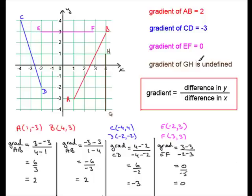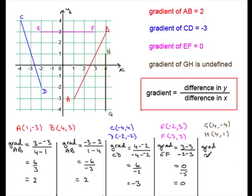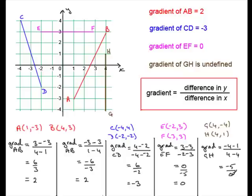What about GH, which I said was undefined? Let's work that one out. The coordinates of G are (4, −4) and the coordinates of H are (4, 1). By the formula, the gradient of GH equals the difference in the y coordinates: −4 minus 1, all divided by the difference in the x coordinates: 4 minus 4. The top comes to −5, but the bottom comes to 0. If you divide anything by 0, it is undefined. So we have an undefined result for the gradient of a vertical line.